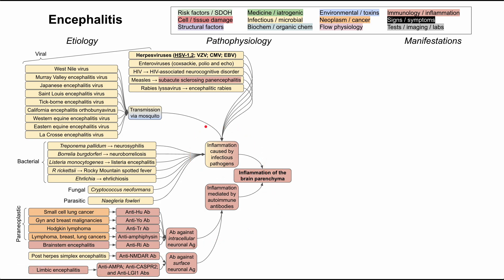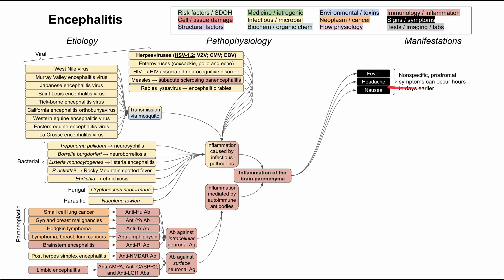Both infectious and autoimmune encephalitis cause inflammation of the brain parenchyma. The manifestations are quite varied — some are localized to the brain, some are neurologic, some are psychiatric, and some are general. The non-specific manifestations can be prodromal, occurring hours to days before other symptoms. Brain inflammation can cause fever, headache, and nausea — the fever and headache come from inflammation, and nausea can be triggered because parts of the brain regulate that response.